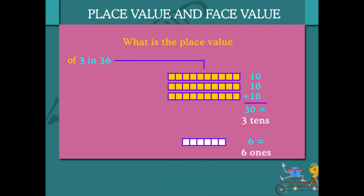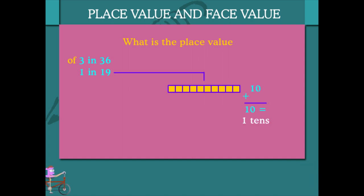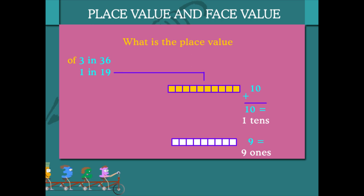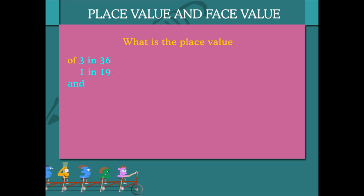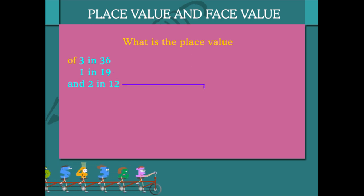And now the place value of 1 in 19. Easy! It is 1 ten and 9 ones. So, the place value is 1 ten.